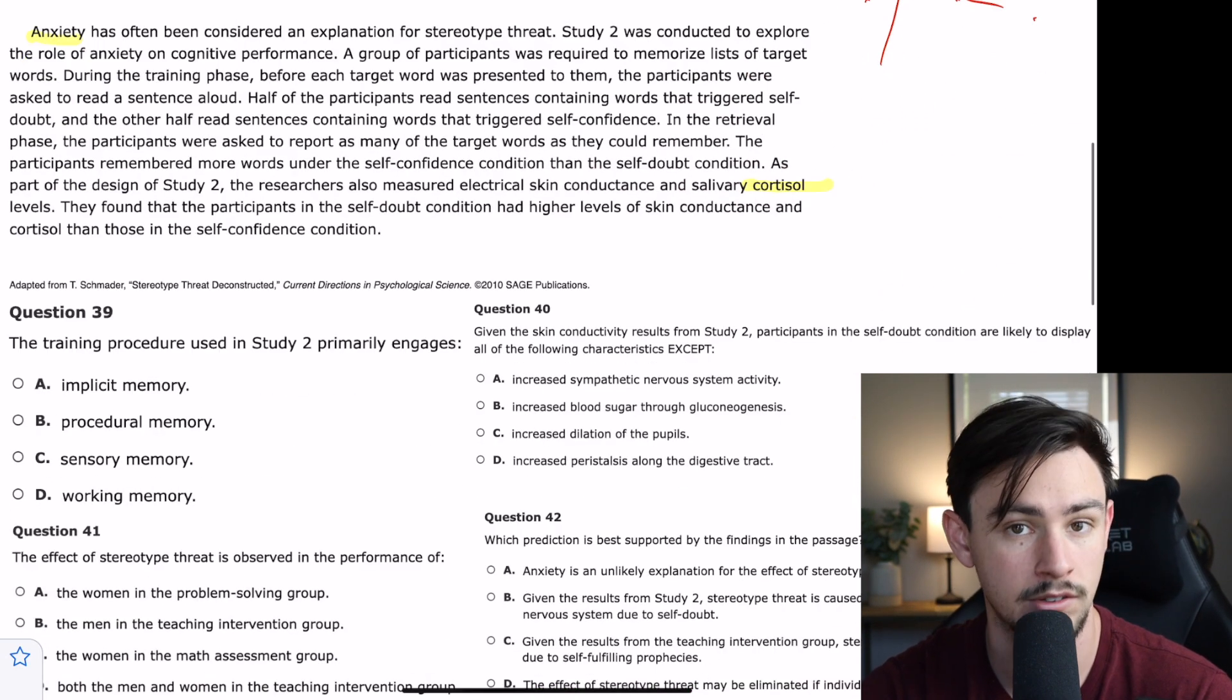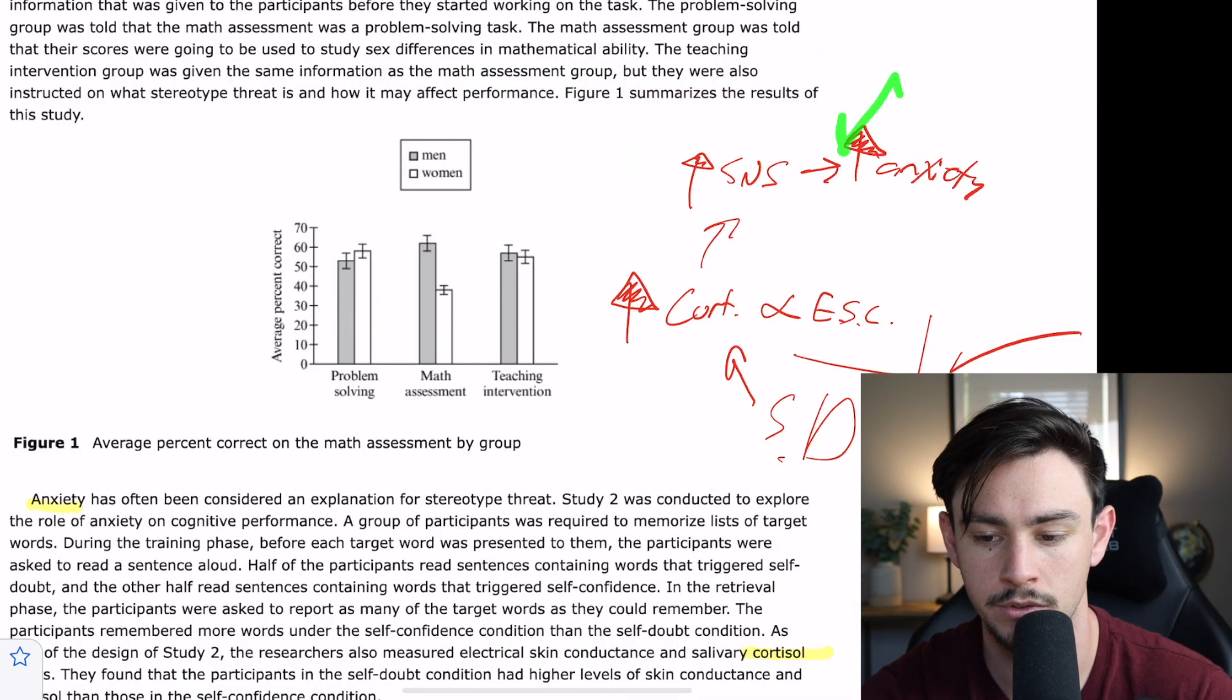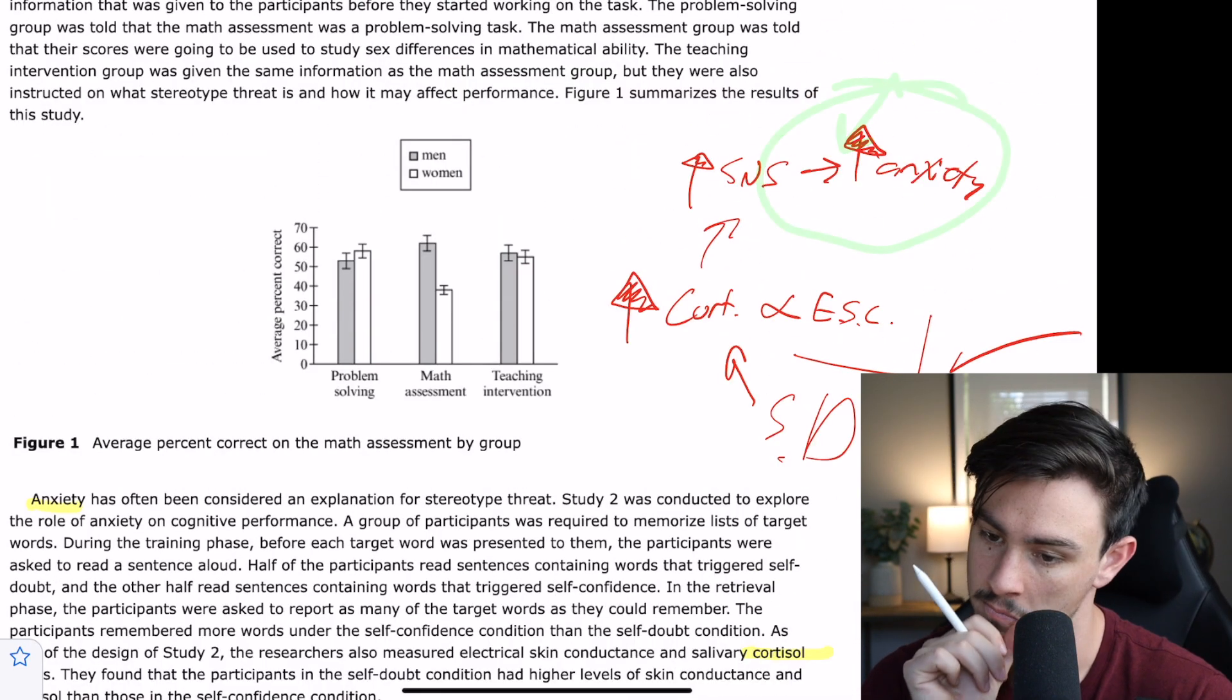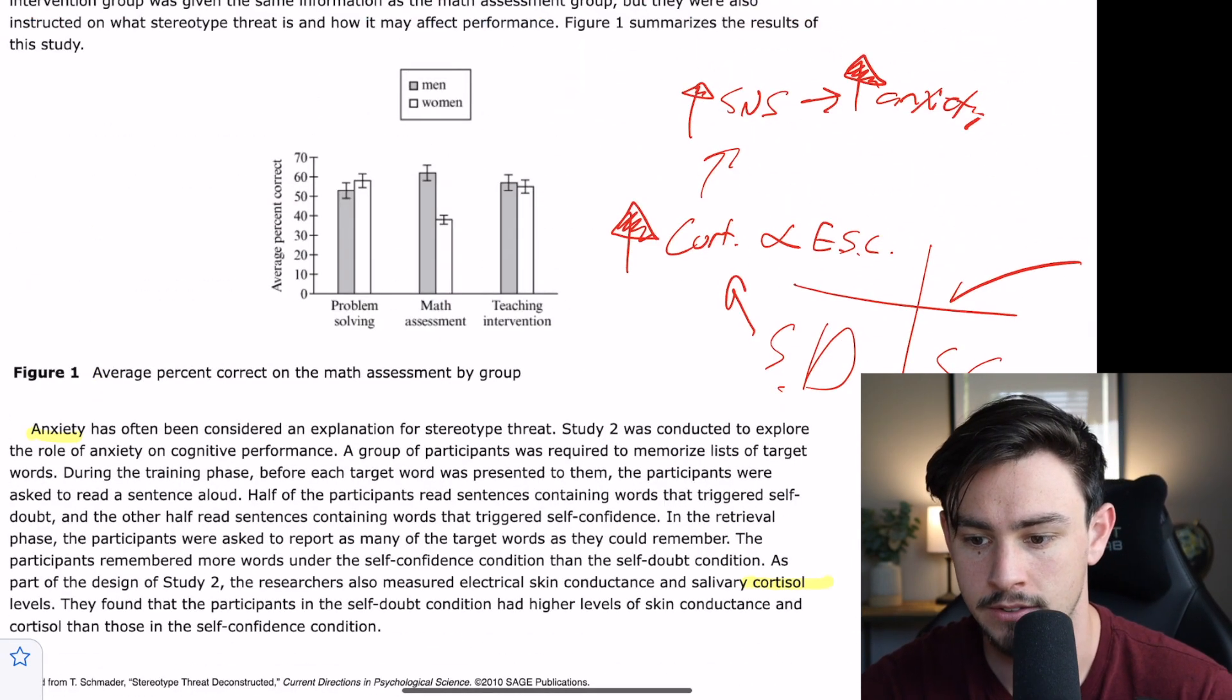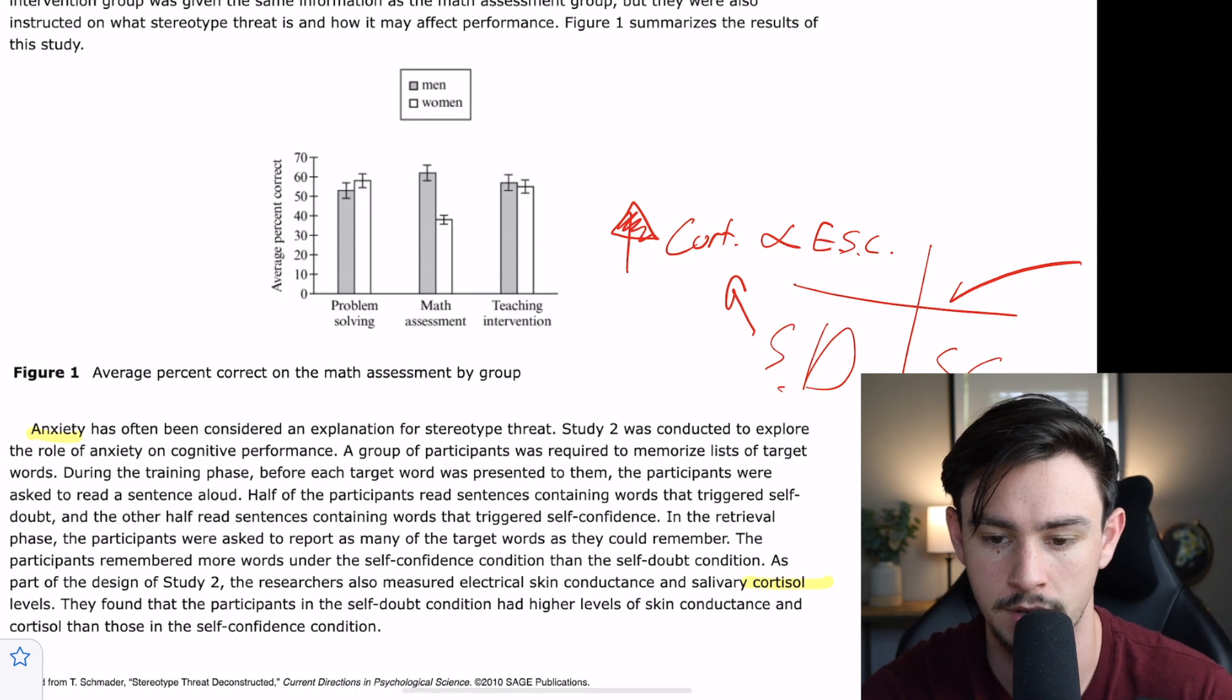I use a lot of abbreviations. So, cortisol is the stress hormone. It's also kind of associated with, like, the sympathetic nervous systems and fight-or-flight stuff. So, keep all that in mind whenever you are in this self-doubt condition. You're releasing a lot of cortisol. You've got a lot of this sympathetic nervous system going on. And that is probably causing some anxiety. That's kind of what they're saying that they're finding here. But let's take the questions. I did make a leap right here. This was not in the passage. I just learned that in school. So, I'm going to erase it then because that's not in the passage. Nobody cares what I know. Okay.